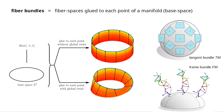We are also going to look at fiber bundles, which you can think of as a base space — for instance, a manifold — to which you glue a fiber at each point. If you have a circle as base space and an interval as fiber, gluing it gives a cylinder. But if you glue with a twist as you go around, you get a Möbius strip. These spaces are fiber bundles, and they are important in geometry because the tangent spaces on a manifold define a vector bundle called the tangent bundle. You can also look at the frame bundle, which is the bundle of all reference frames at all points.